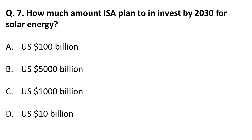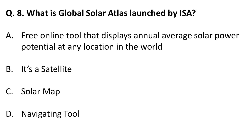How much amount does the International Solar Alliance plan to invest by 2030 for solar energy? The ISA plans to invest one trillion dollars — that is one thousand billion American dollars — in producing solar energy by 2030. Remember this figure: one trillion USD.